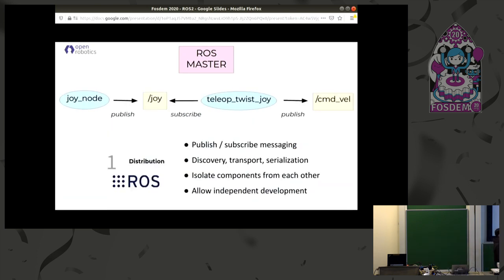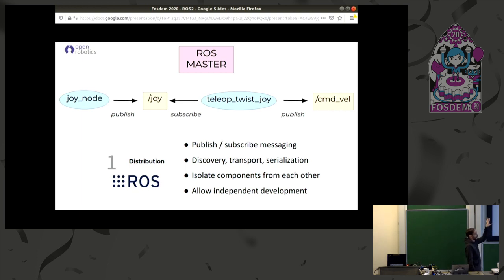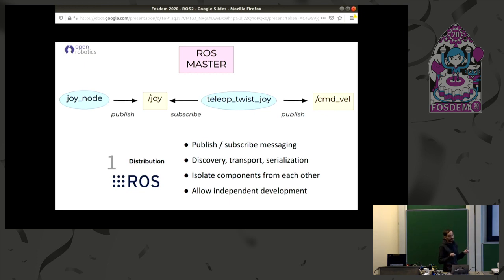This is the first principle of ROS, which we call distribution. We have a publish-subscribe service with dynamic discovery of the different parts of the system, done using the ROS master. Components are fully isolated — two different processes that work completely independently, communicated only via communication channels with no shared API. This allows for independent development: you can swap the remote control for a SpaceNav or Wii controller, and the system keeps working the same way.